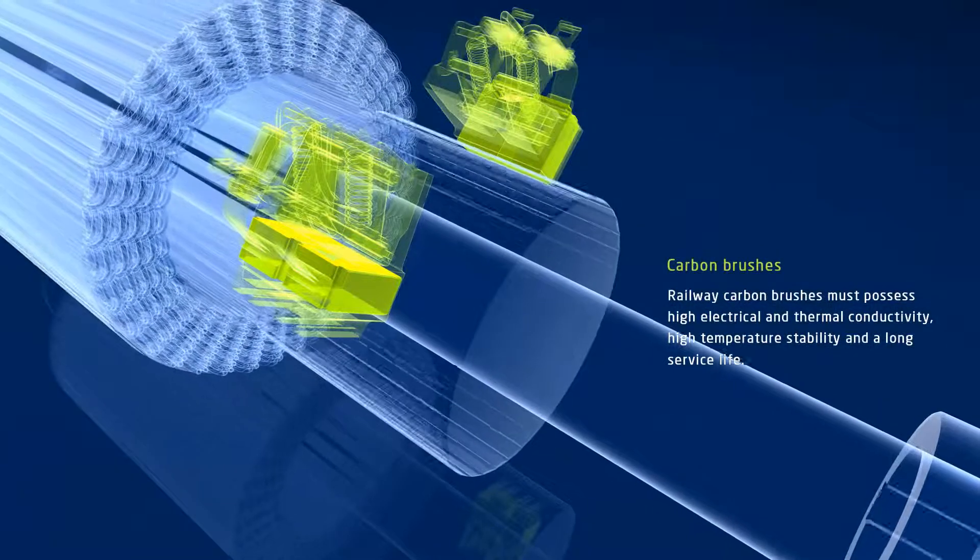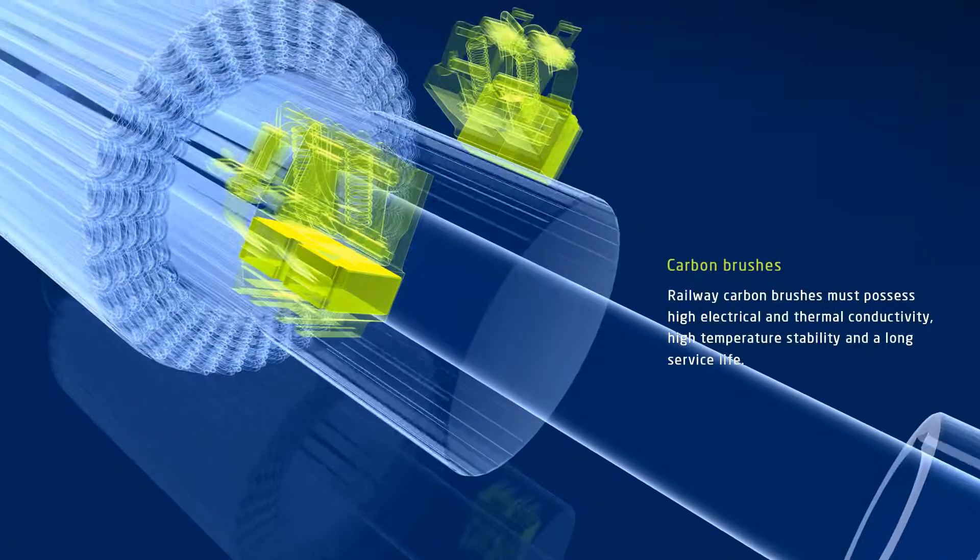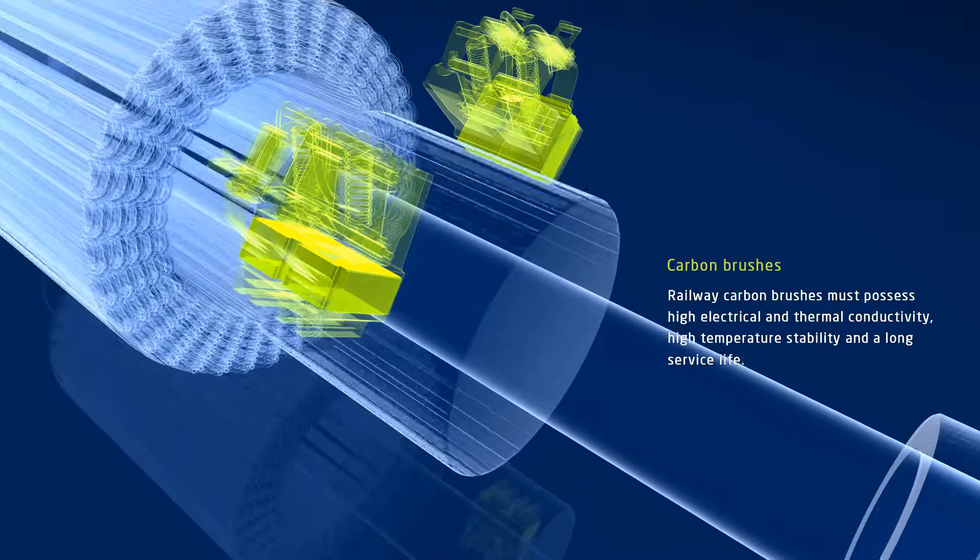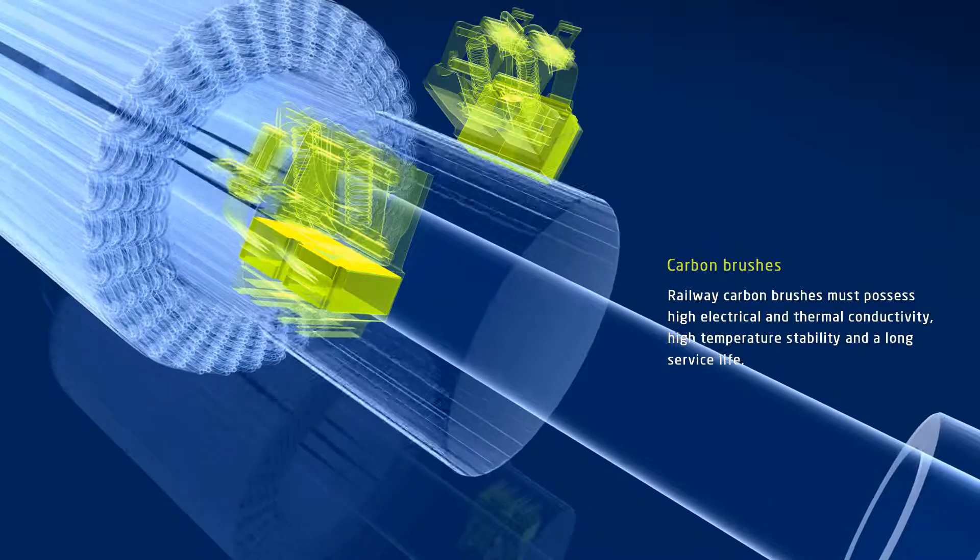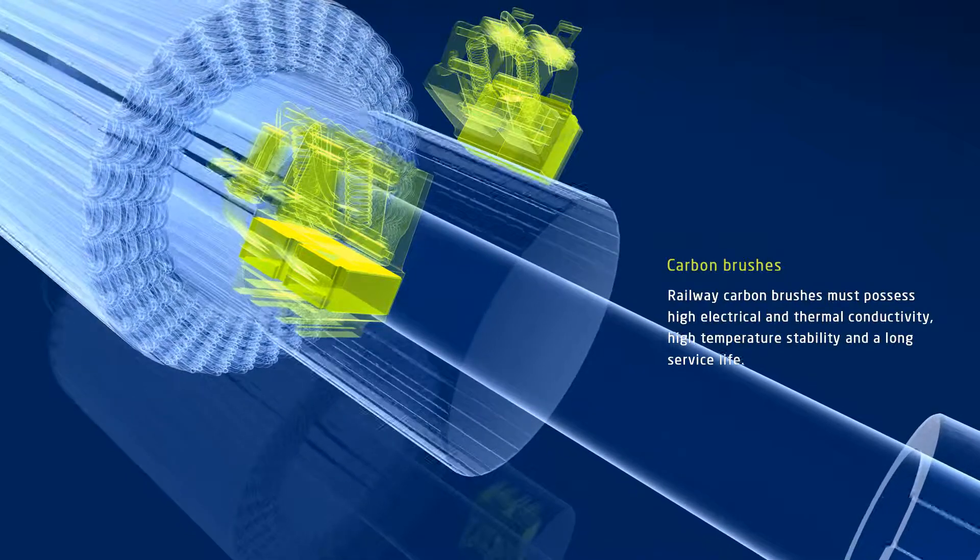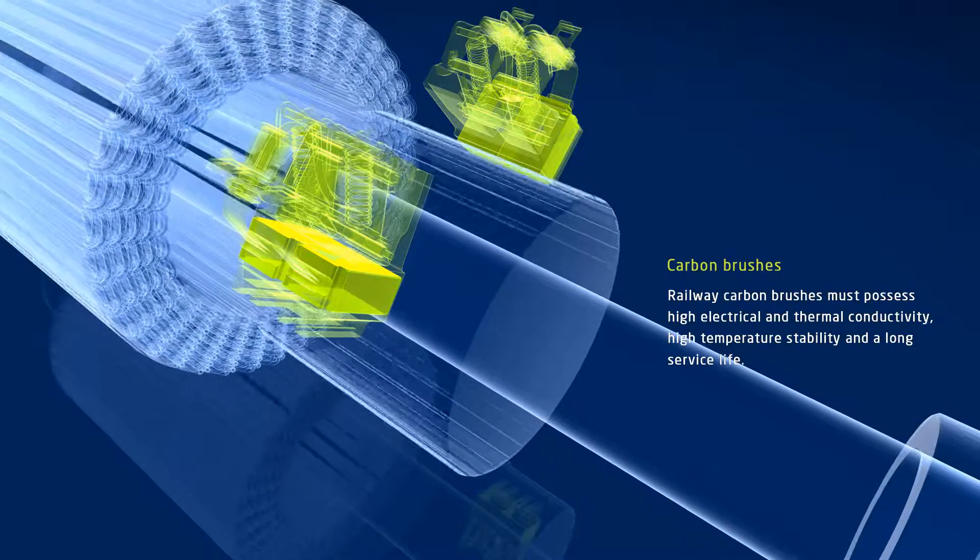Carbon brushes for trains must meet high requirements. For example, they must possess very good electrical and thermal conductivity. In addition, they must be able to withstand high temperatures. And last but not least, they should be able to perform their task perfectly for as long as possible.